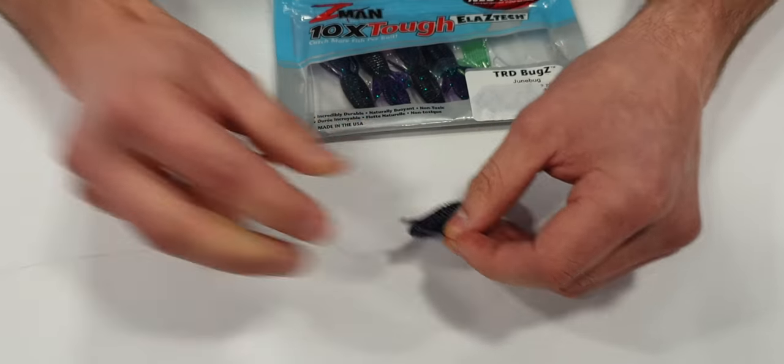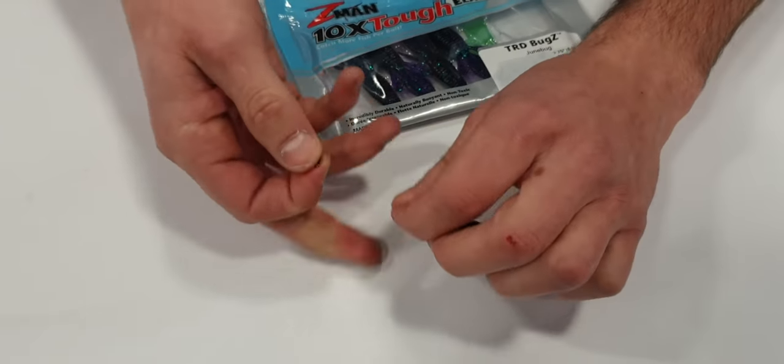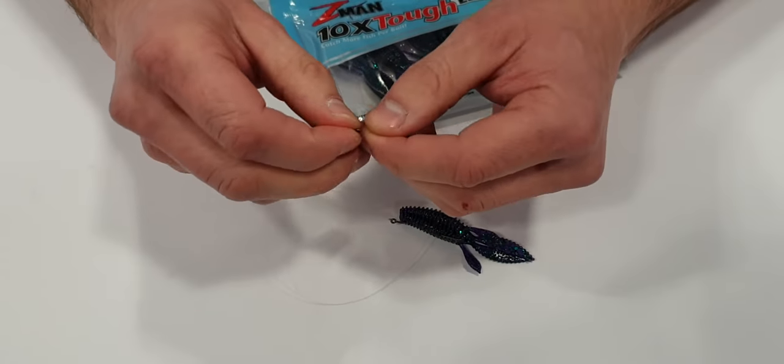So it's dead simple, all you do is take a swivel and thread it onto your line above your offset hook.